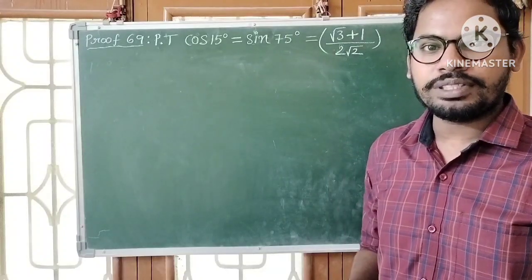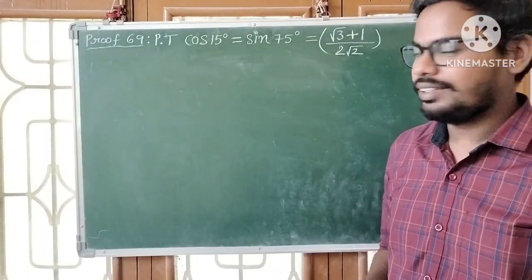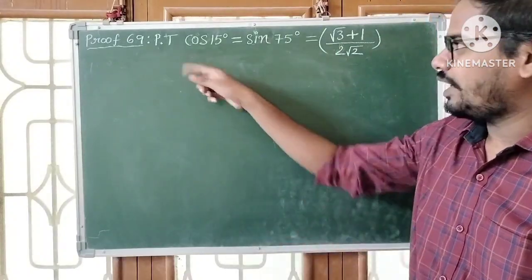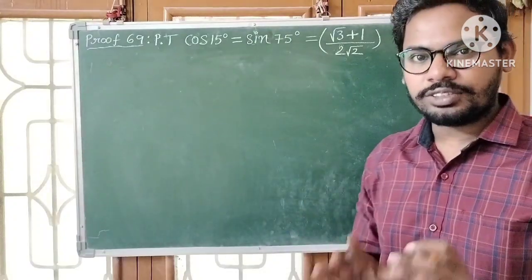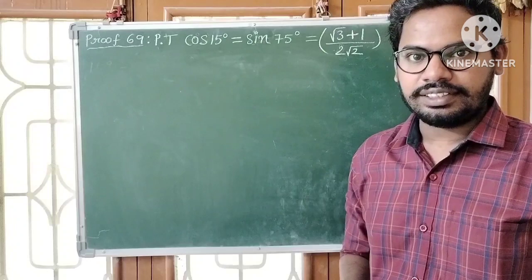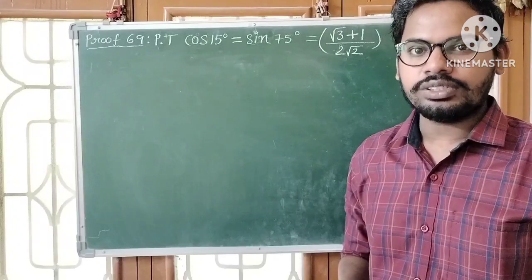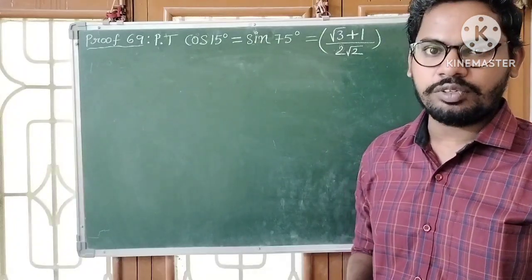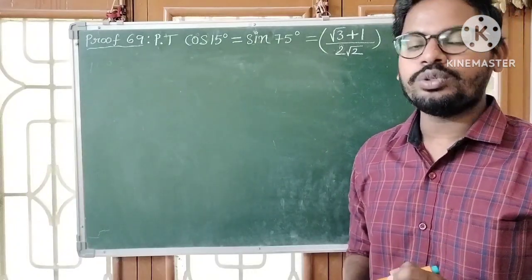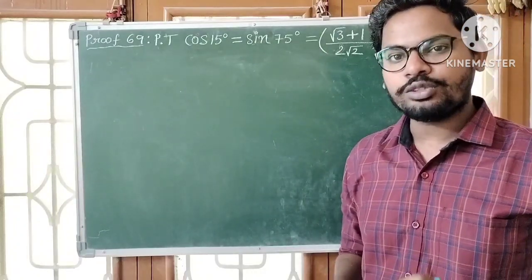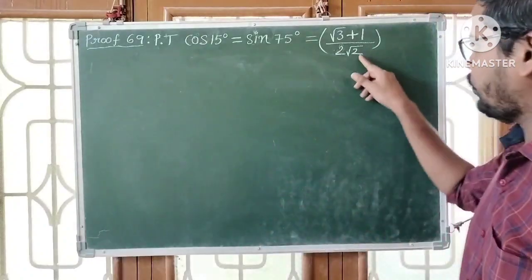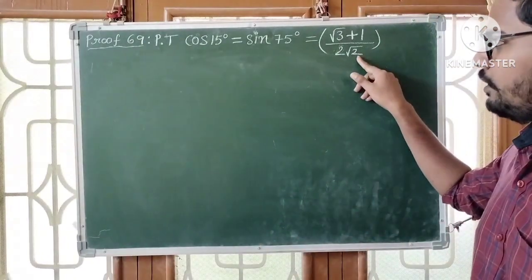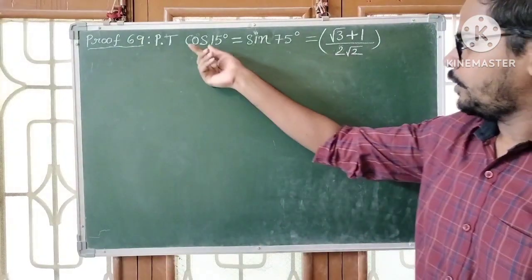Proof number 69. Prove that cos 15 degrees is equal to sin 75 degrees is equal to root 3 plus 1 by 2 root 2.